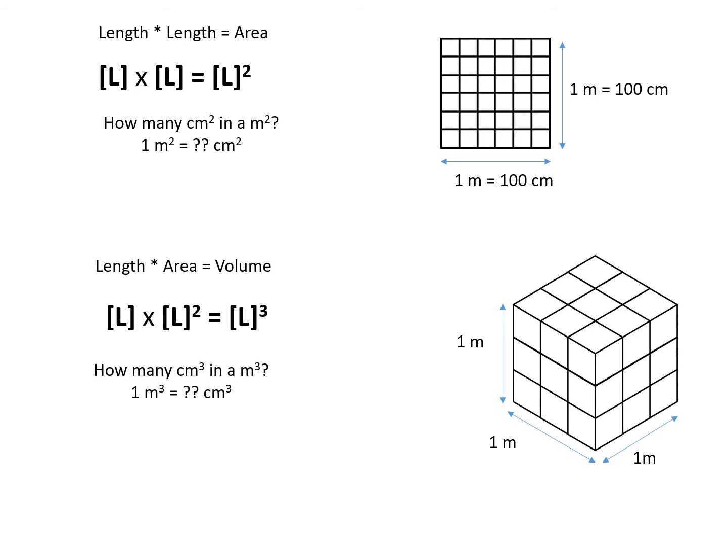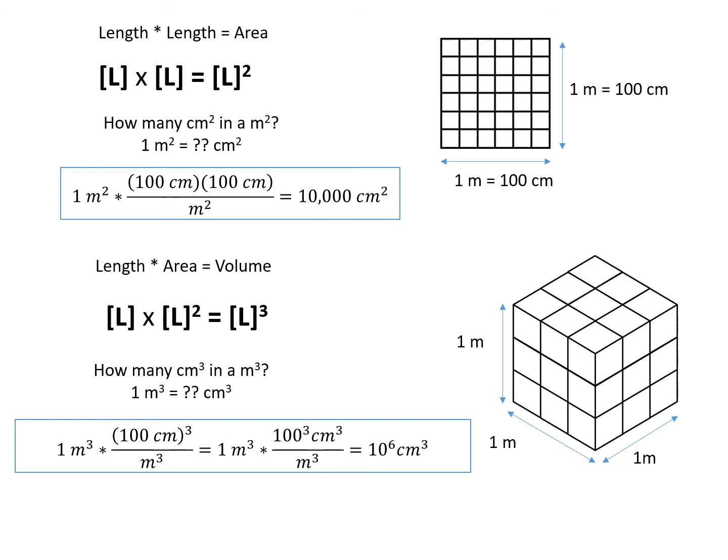Length plus a length must be a length. Length squared plus a length squared must be a length squared. The dimensions have to be the same to be added together. Similarly, a length cubed plus a length cubed equals a length cubed. You can't add a length and a length squared and get something else. It's just not a correct operation. Length by length is an area. This is a problem that in remote sensing students often screw up. How many centimeters squared are there in a meter squared? There's 100 centimeters per meter, but we're talking about an area, so we need 100 squared to get 10,000 centimeters squared. How many centimeters cubed in a meter cubed? That would be 100 times 100 times 100, which is a million or 10 to the power of 6.